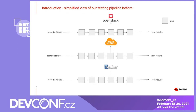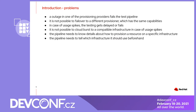This is how our pipeline looked before, and what were the problems? If there was an outage in one of the provisioning providers, it usually meant the test pipeline would fail — a pain for our users. It was also not possible to fail over between different provisioners even if they had the same capabilities. For example, OpenStack and AWS are similar VM infrastructures, but we couldn't transparently fail over between them. In case of usage spikes, since none of the infrastructures is infinite, you could reach a state where you cannot provision enough machines, causing testing delays or failures. Cloud bursting to a different compatible infrastructure wasn't possible either. And the pipeline had to know the details about how to provision resources on a specific infrastructure and which pipeline to use before running.